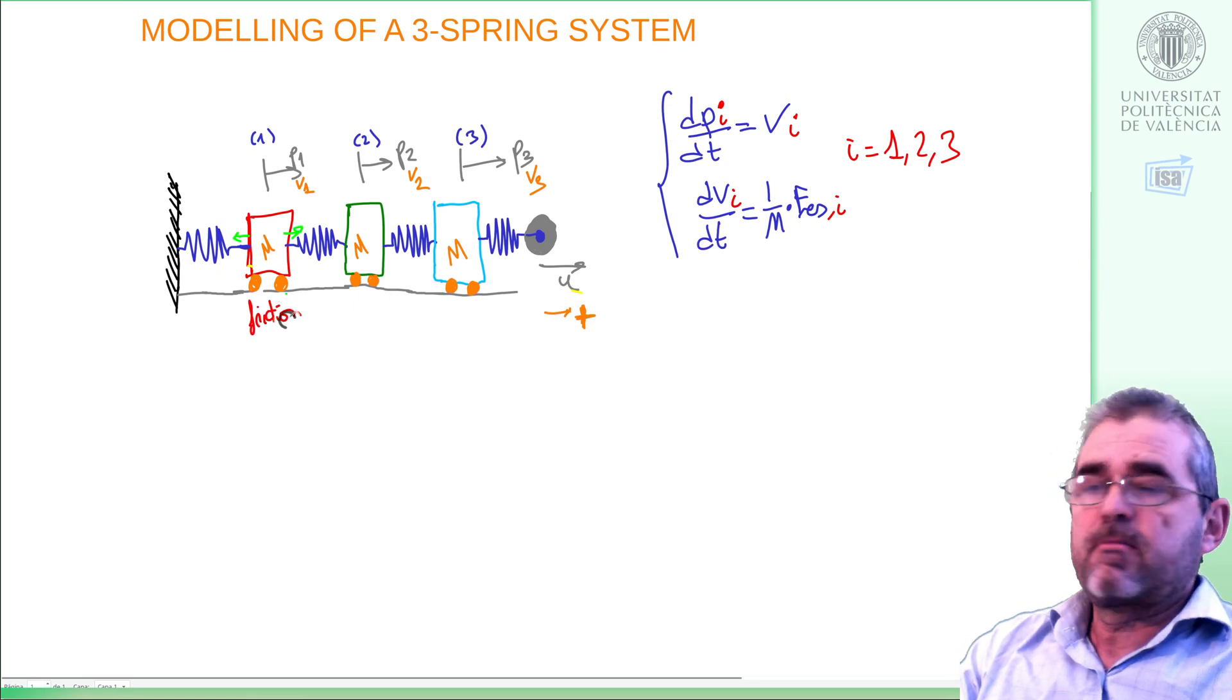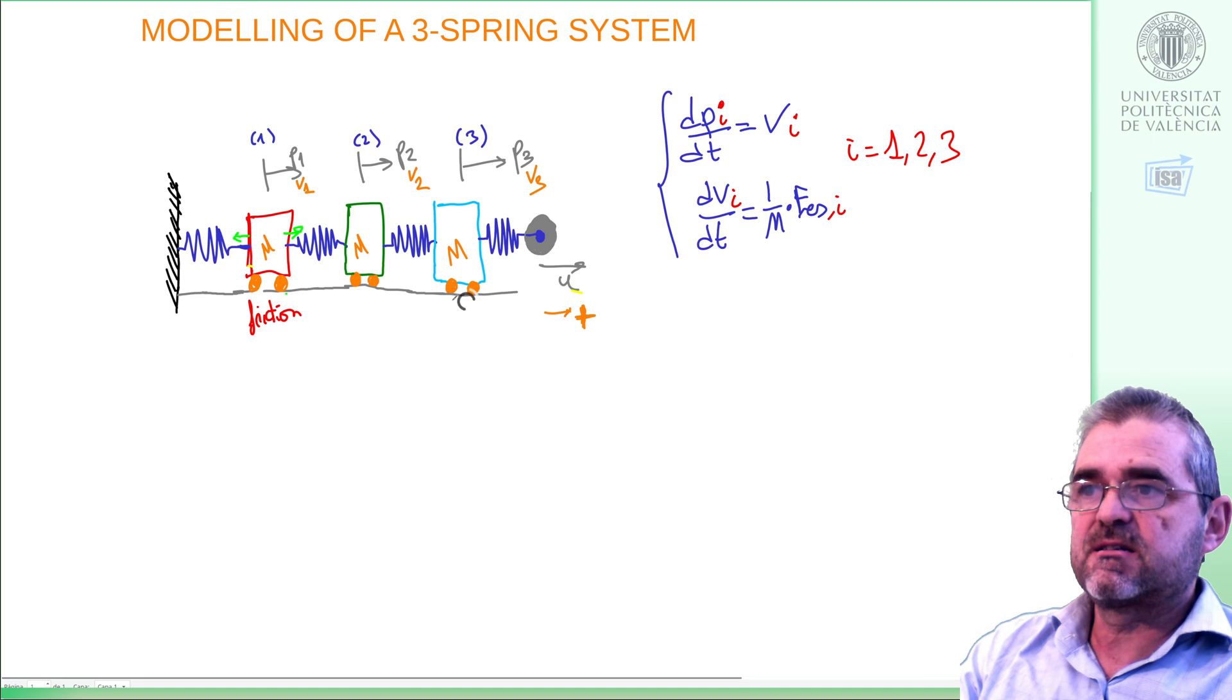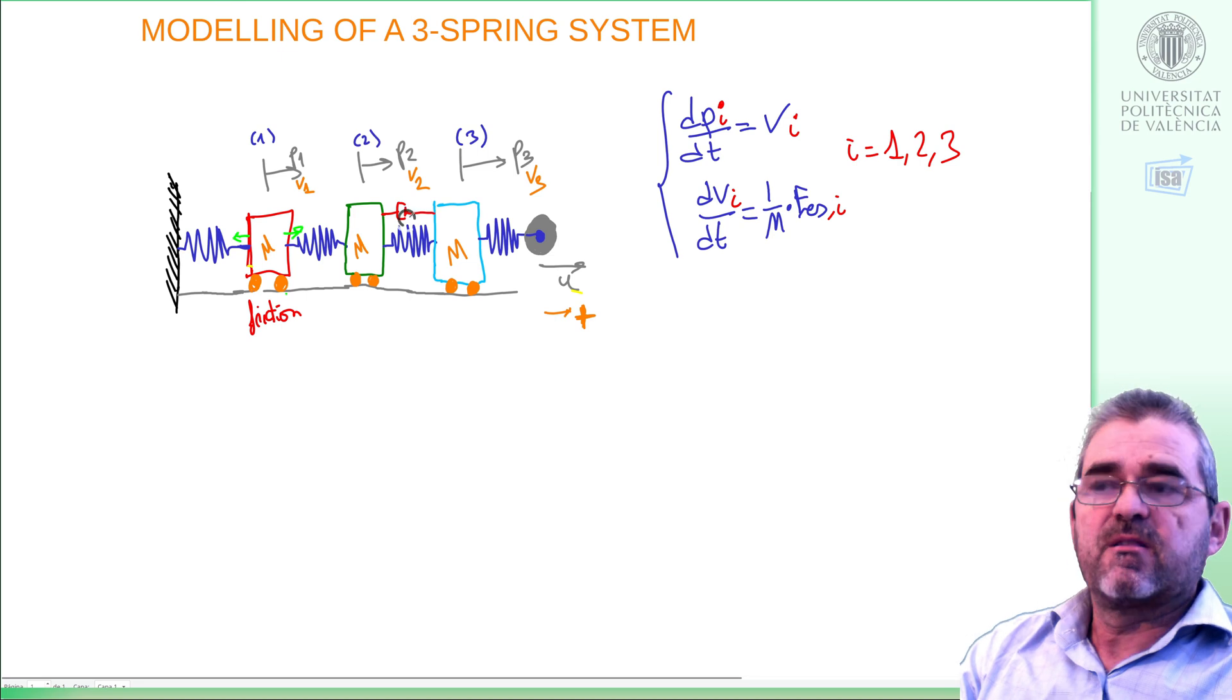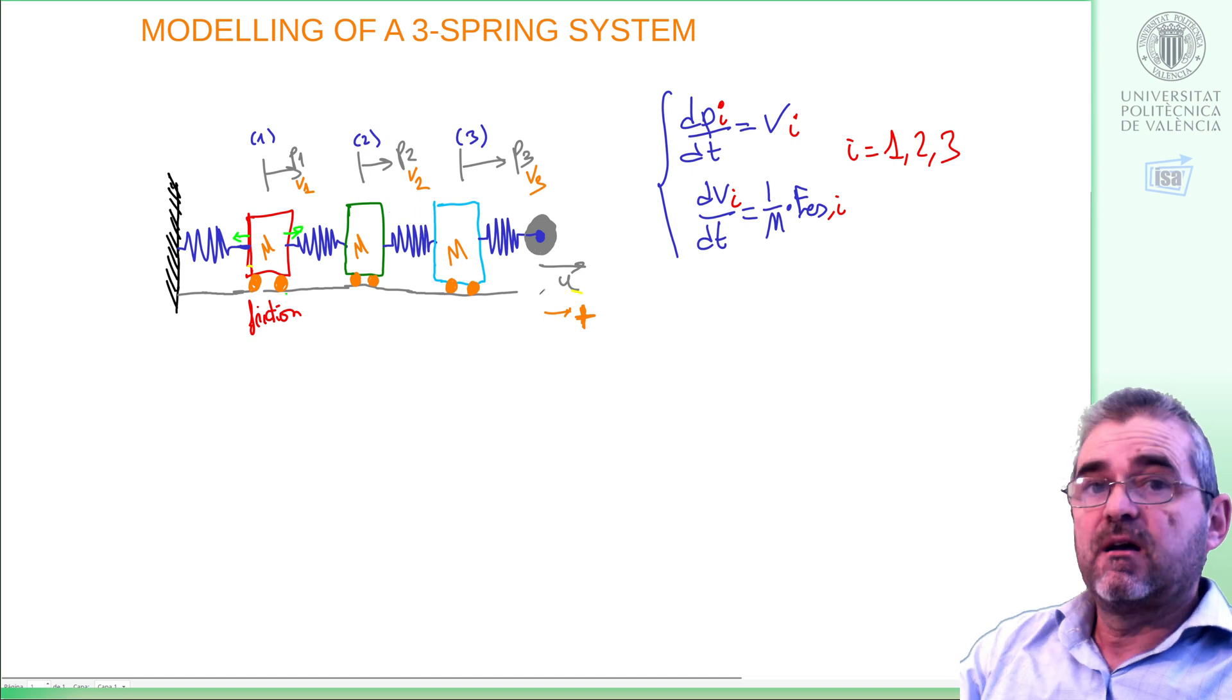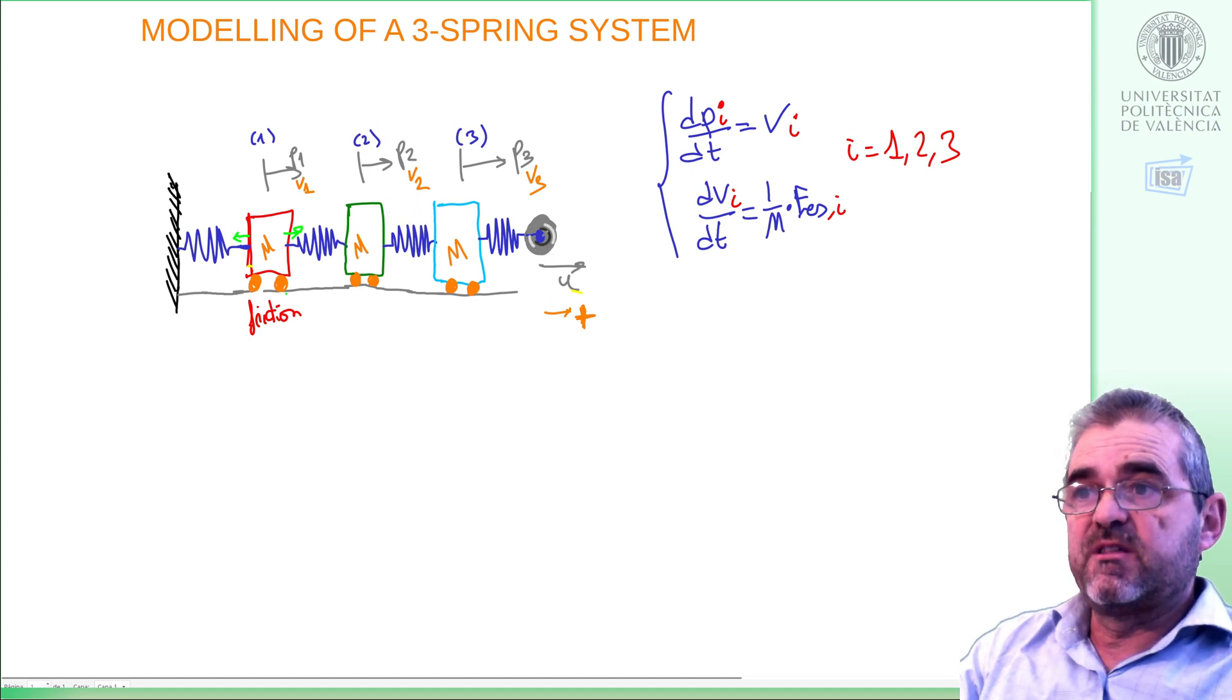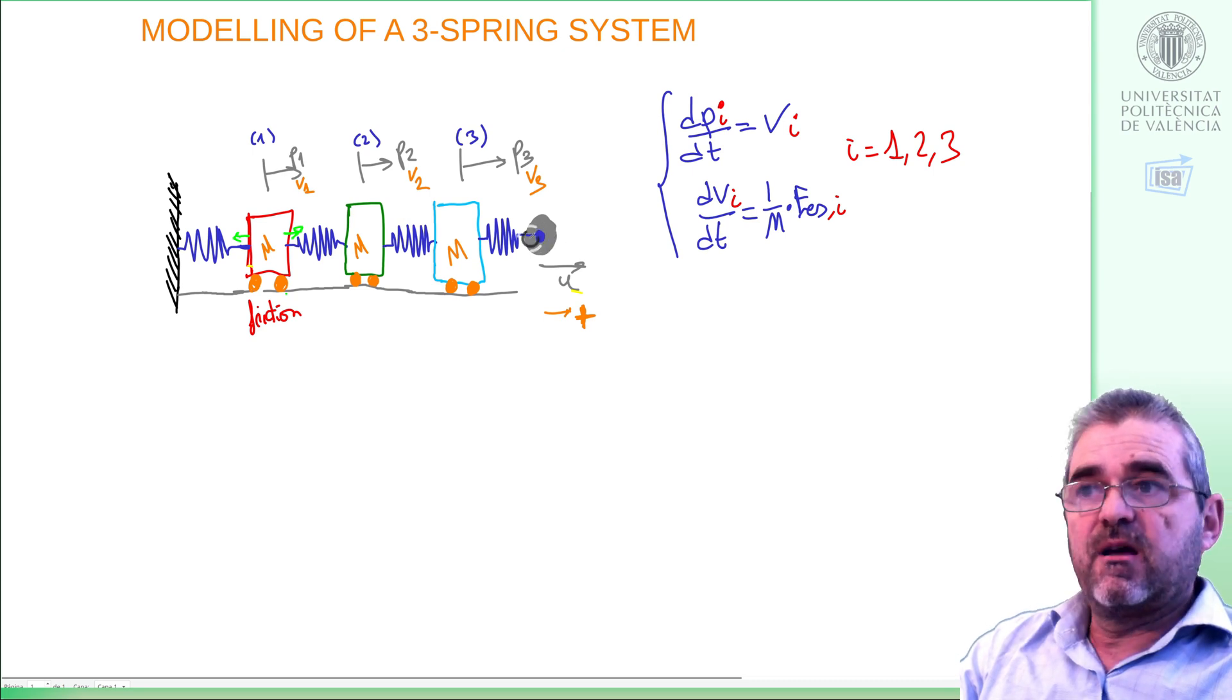We'll assume that there is some friction at the wheels of each of the masses in this cart, but we will not assume, for instance, that there is a kind of damping due to the relative movement, for simplicity. And our input signal will be the displacement of this right extreme, so someone pushes or pulls in here, and that movement will make this spring stuff vibrate.